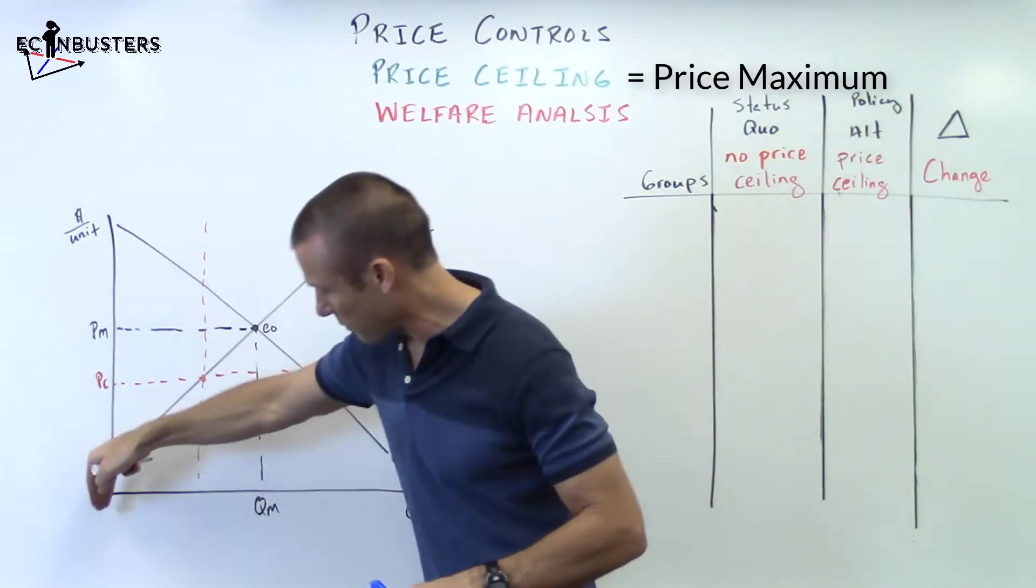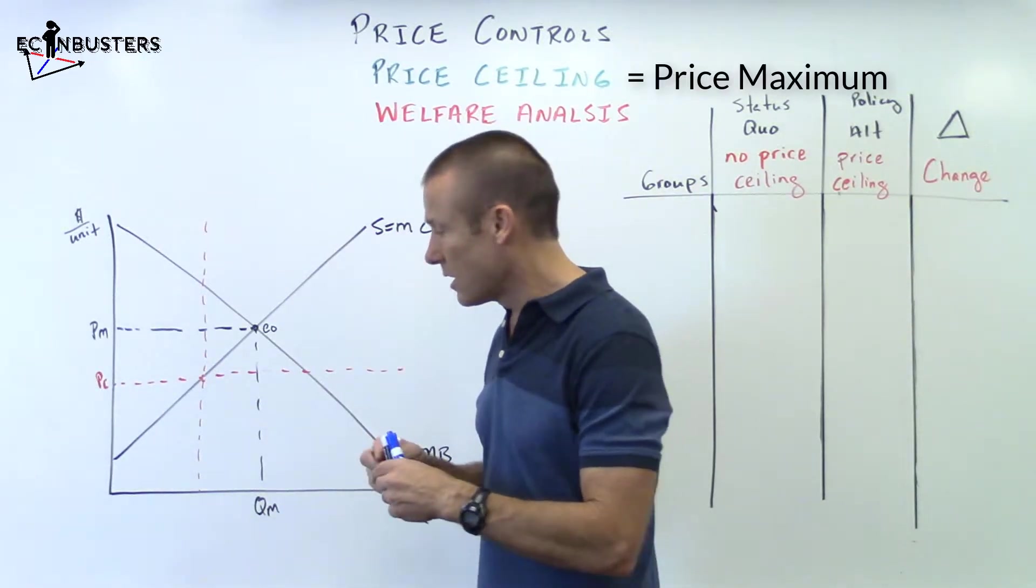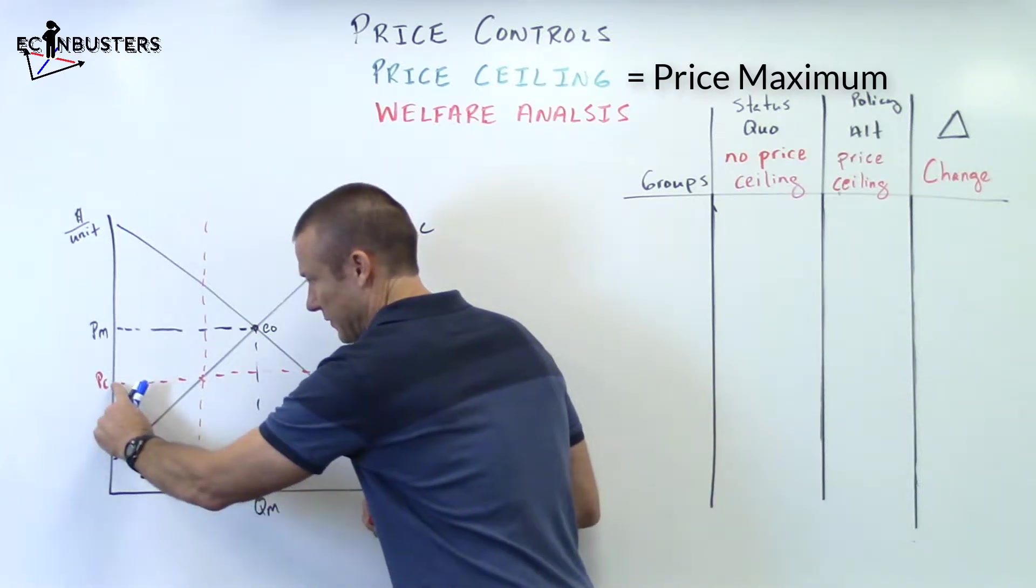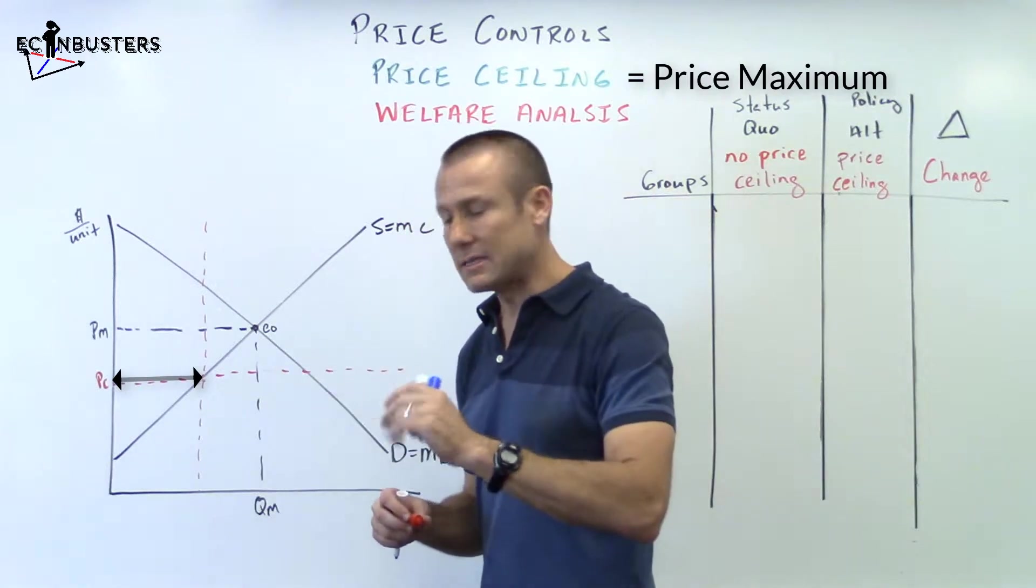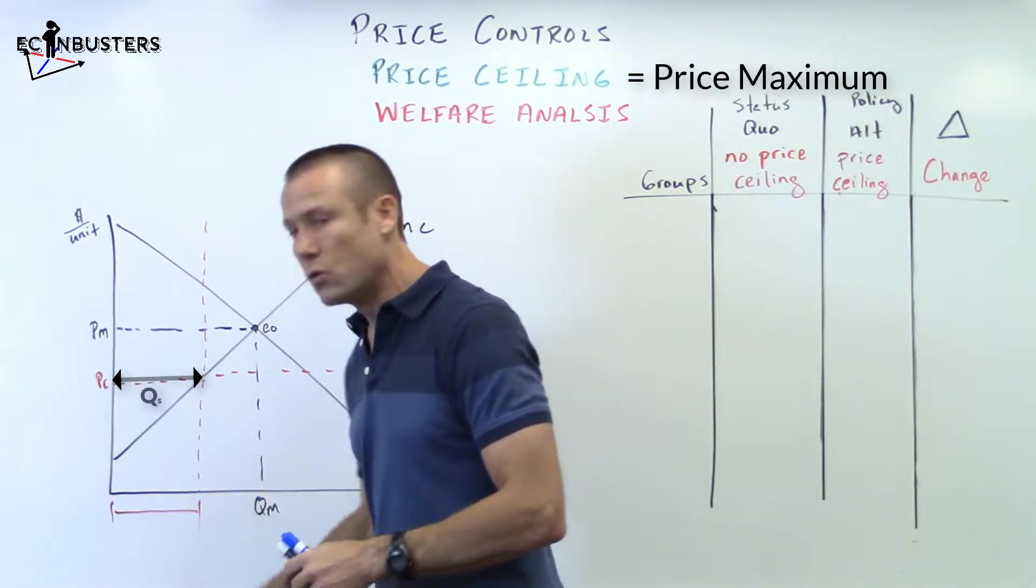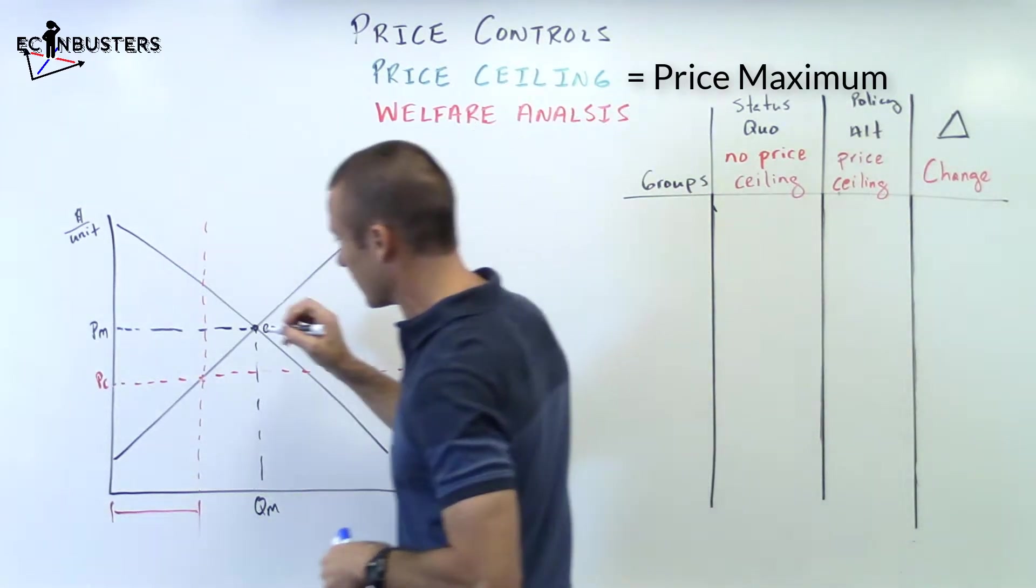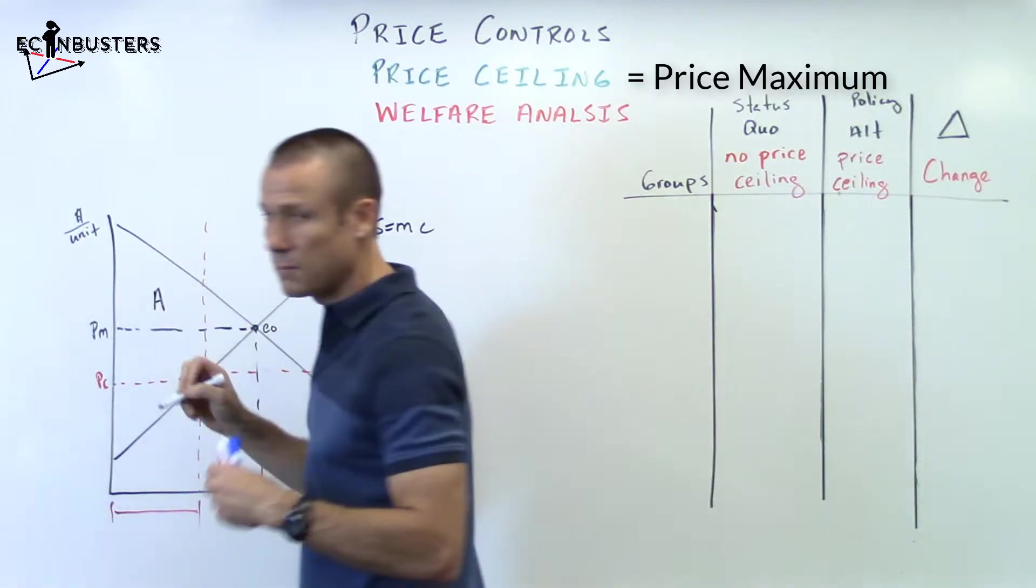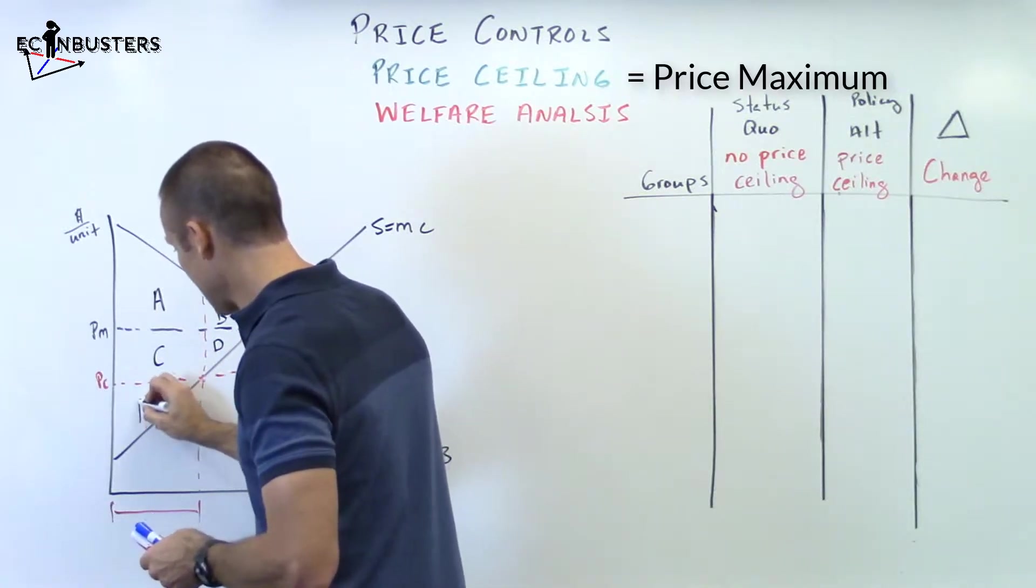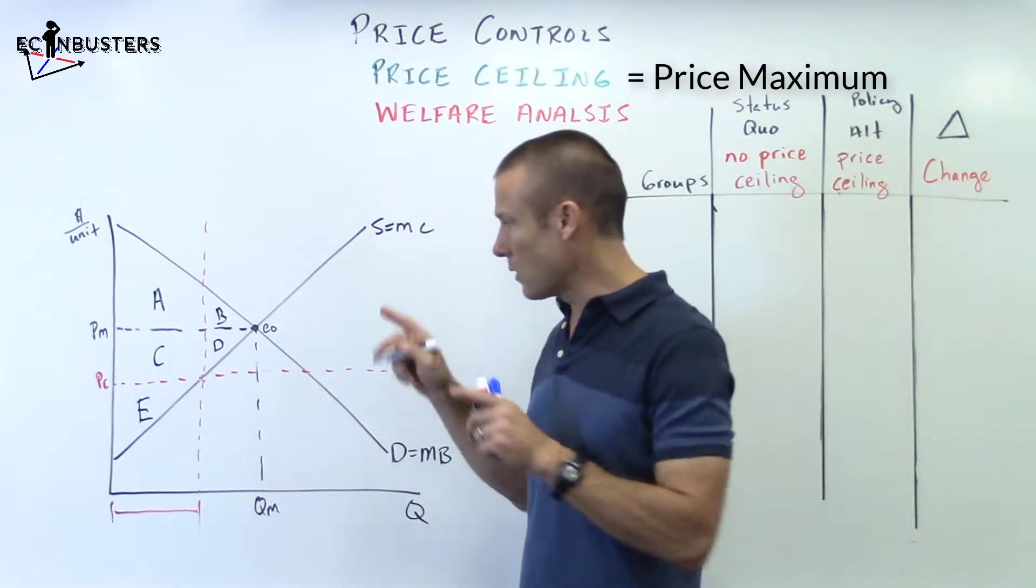Now there's going to be something very important. I'm going to need this line right there. Why do I need this? Why do I want to mark that output level? Because once that price ceiling is put into place, the quantity supplied is only going to be that horizontal distance, right? At that price, that horizontal distance is the quantity supplied. So that's all that's going to be supplied with the price ceiling. With that said, let's go ahead and mark up this graph right here. We're going to put letters in marking areas of the graph. A, B, C, D, and E. Those are the only letters we're going to need.